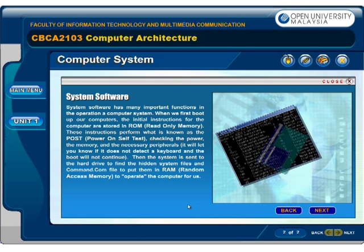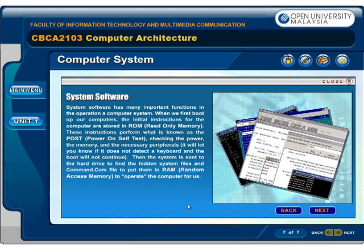System software has many important functions in the operation of a computer system. When we first boot up our computers, the initial instructions for the computer are stored in ROM, or read-only memory. These instructions perform what is known as POST, or power-on self-test, checking the power, the memory and the necessary peripherals, or it will let you know if it does not detect a keyboard and the boot will not continue.